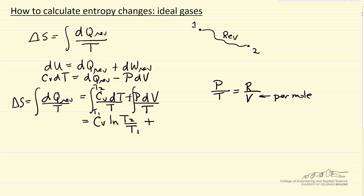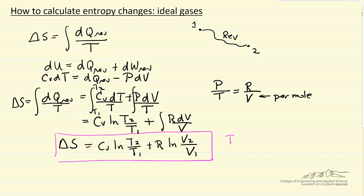So I make that substitution, integral of R dV over V, and I can integrate the second term. So now I have an equation that allows me to calculate entropy change for an ideal gas between some starting volume and temperature and a final volume and temperature.